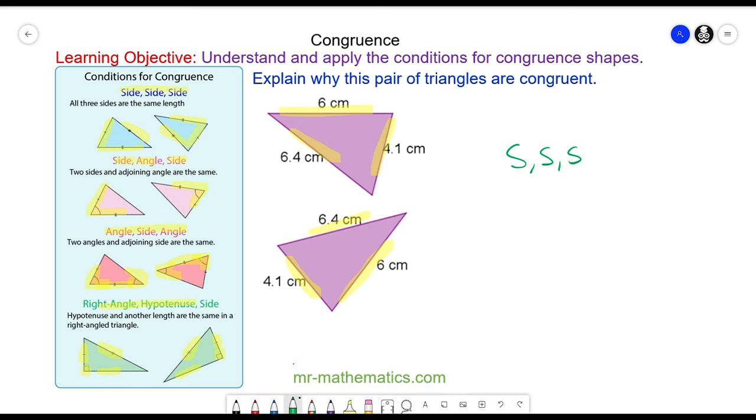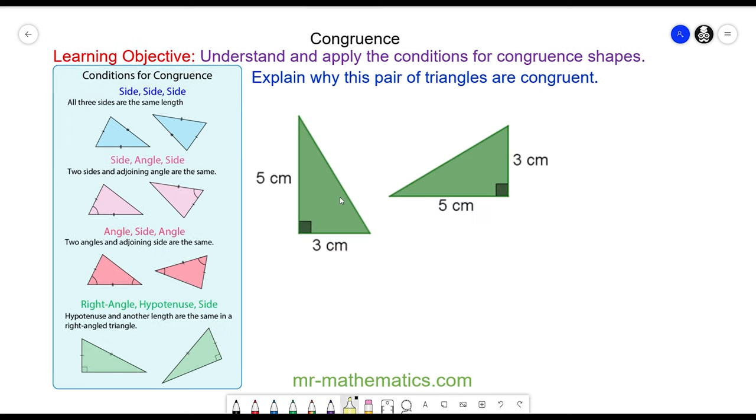We can look at a different pair of triangles. So in this pair of triangles, you've got two sides and an angle—two sides, five and three, and an angle. So this proof is going to be side, angle, side.